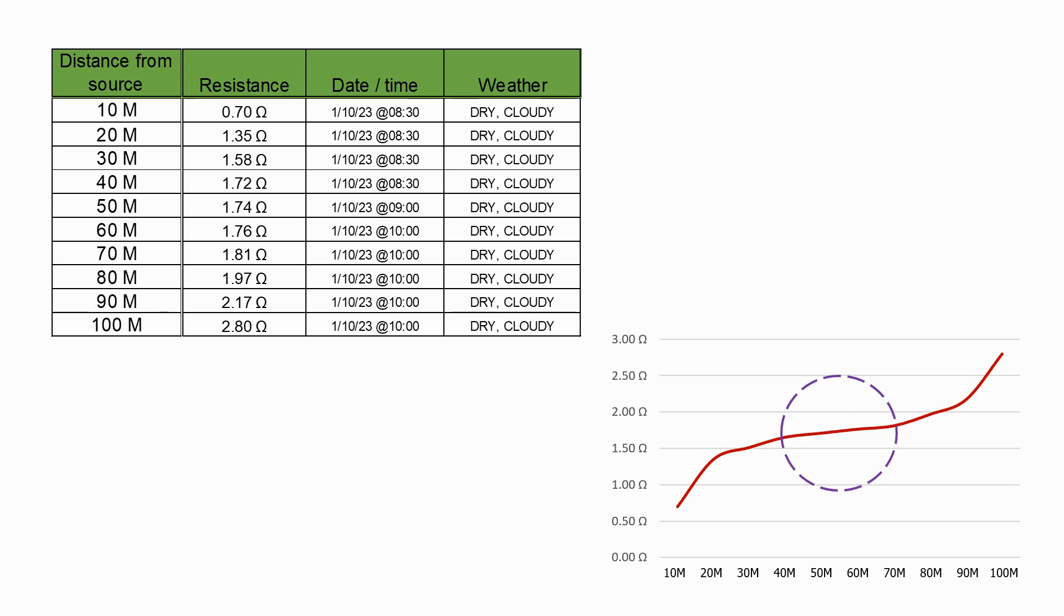Once we have identified these readings, in this case a distance of 40 to 70m from the substation, we average these values which gives us a value of 1.76 ohms and that is the measured grid resistance value of the grounding system that we are measuring.